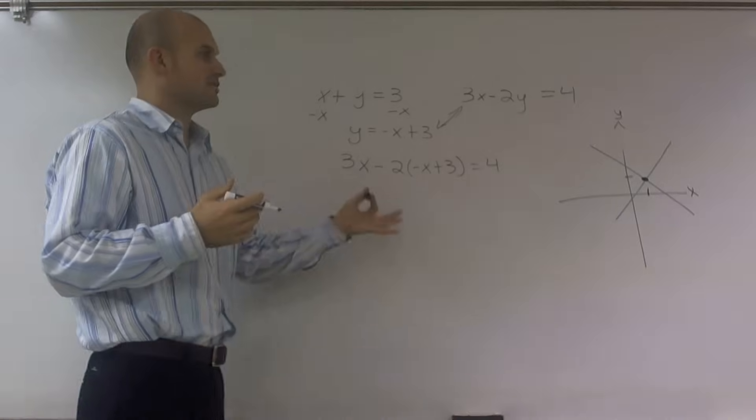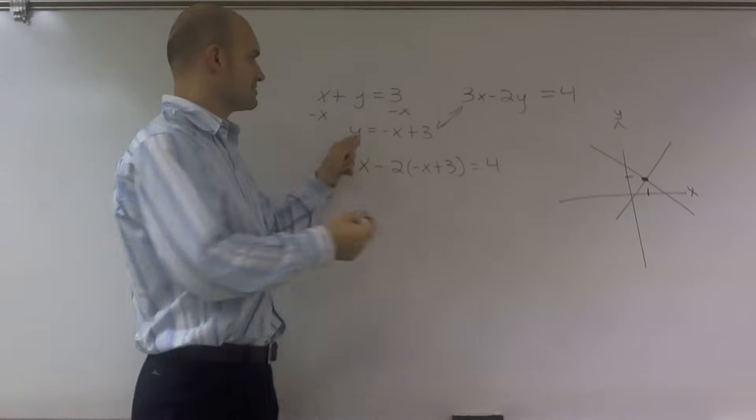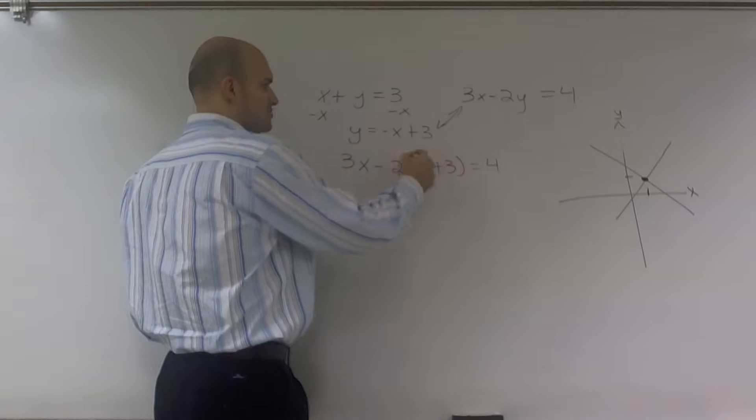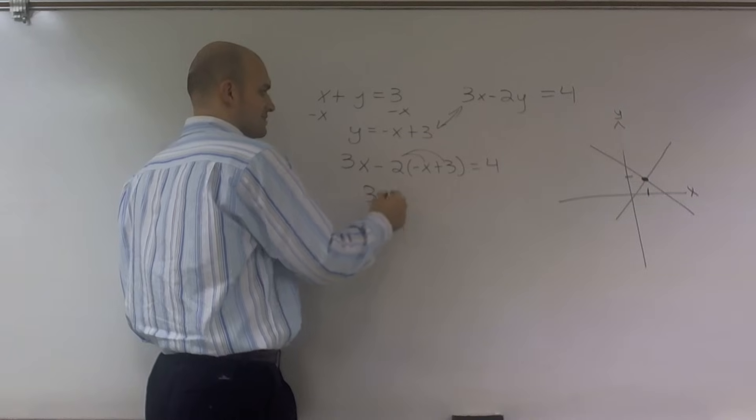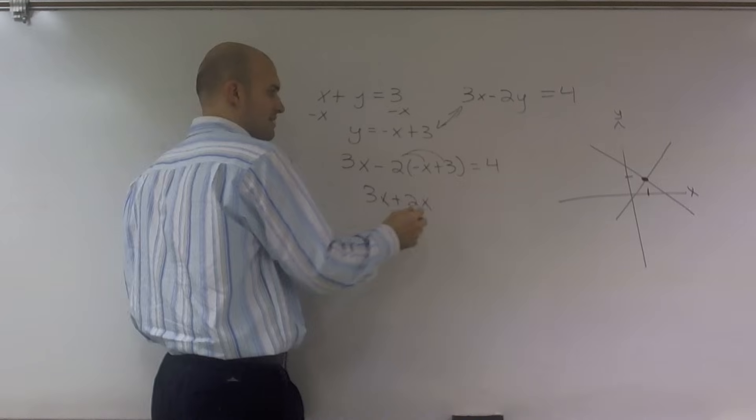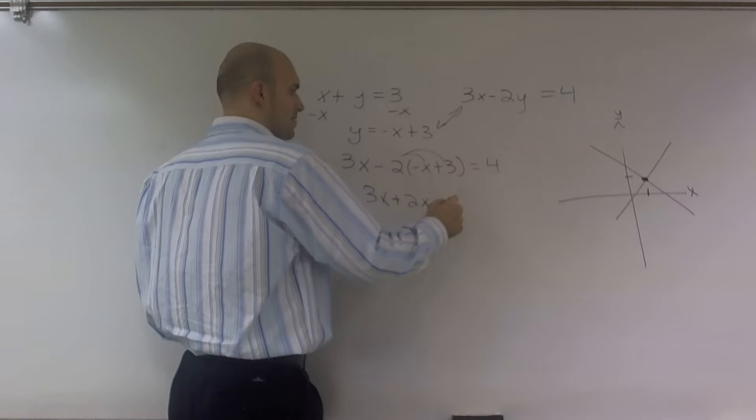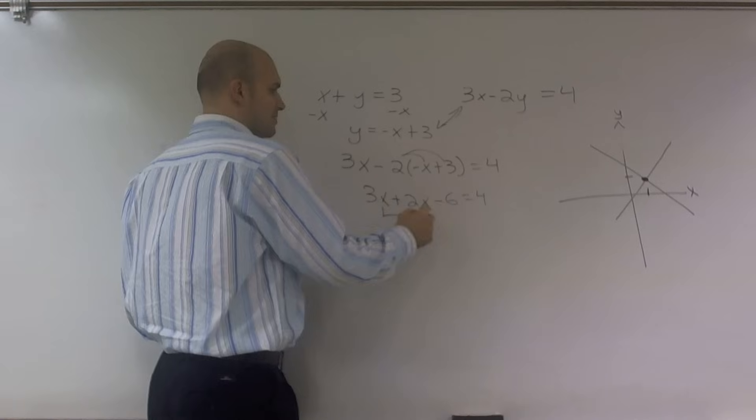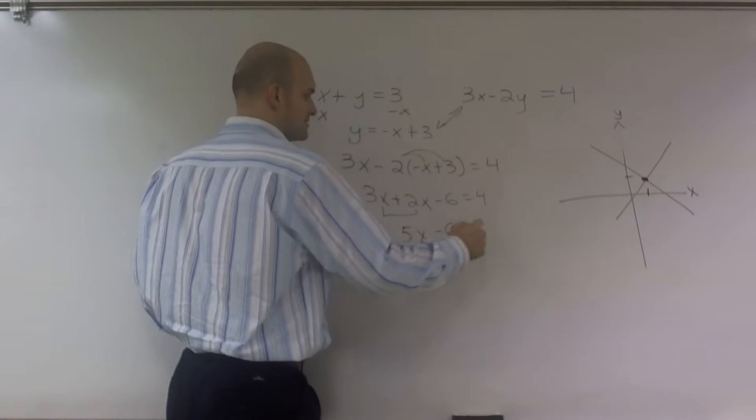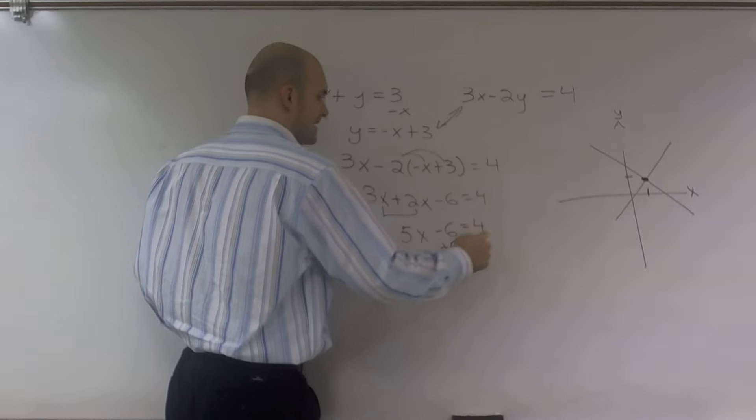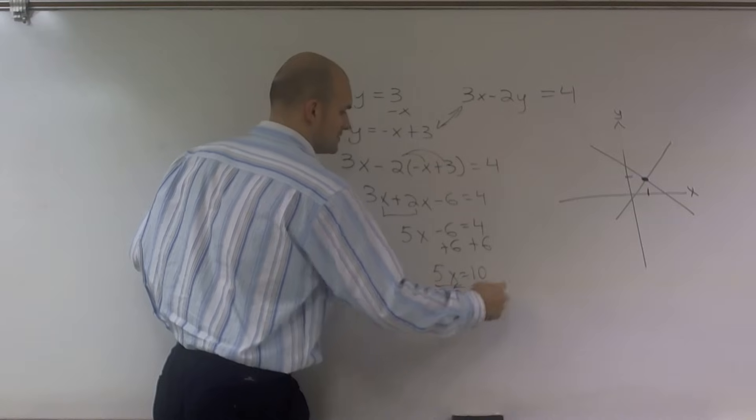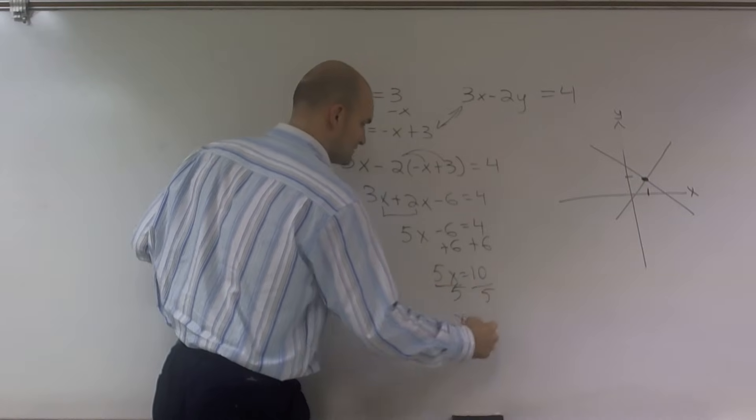Then what I can do is when the y values are the same, meaning I plug one y value into the other one, I can find when will the x values be the same. So I'll use distributive property to give me 3x plus 2x. Negative 2 times negative x gives you positive 2x minus 6 equals 4. Combine my like terms to give me 5x minus 6 equals 4. Add 6. 5x equals 10. Divide by 5. x equals 2.